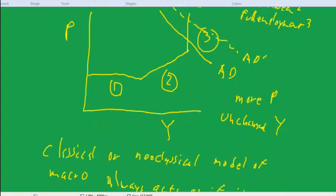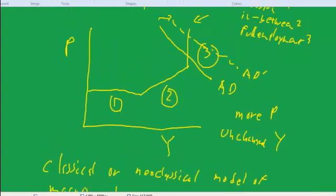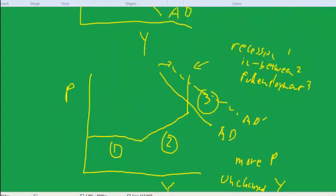So even if we were in a recession, if you believe the neoclassical story, the supply curve would look like this. And as a result, aggregate demand won't increase output. It'll just increase prices.